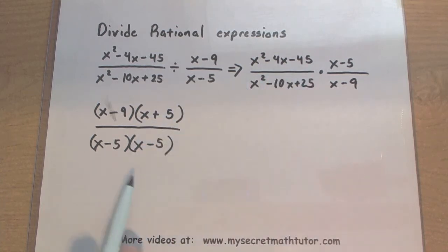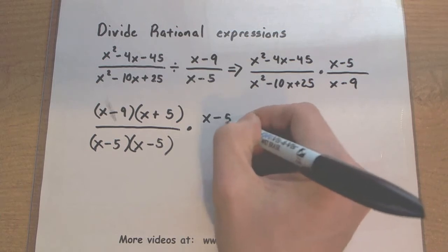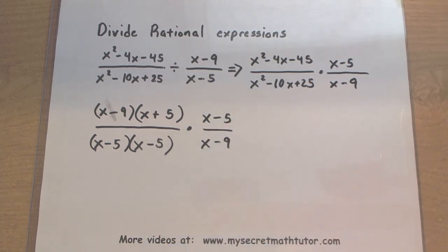Okay, so we've taken this first fraction and turned it into all of its factors. Now notice, we have some common factors in the top and in the bottom that we can go ahead and cancel out.